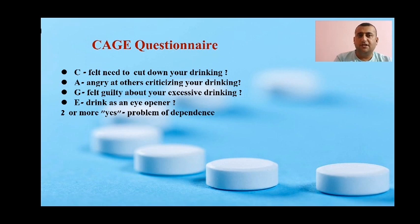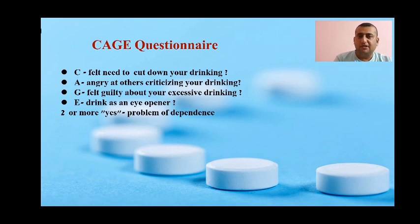The CAGE questionnaire is very important. Each letter has significance: C — whether the patient felt the need to cut down drinking; A — whether the patient becomes angry at others criticizing their drinking; G — whether the patient felt guilty about excessive drinking; E — whether the patient drinks alcohol as an eye-opener. If there are more than 2 positive answers, there is a problem of dependence.